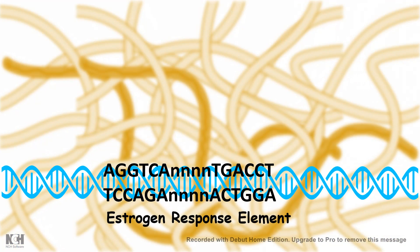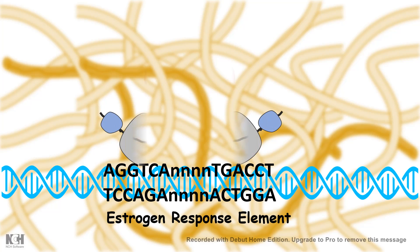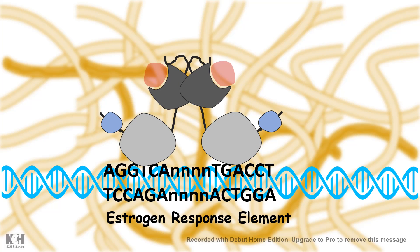Looking in more detail at nuclear receptors, there are multiple motifs on the DNA where intracellular receptors can bind. For example, the estrogen receptor binds to an estrogen response element — a specific hexameric sequence followed by a gap and another hexameric repeat. The zinc finger motif of these receptors binds these sequences generally as a homodimer. For steroid receptors, homodimers first bind the ligand, then translocate as a dimer into the nucleus to drive transcriptional activation.